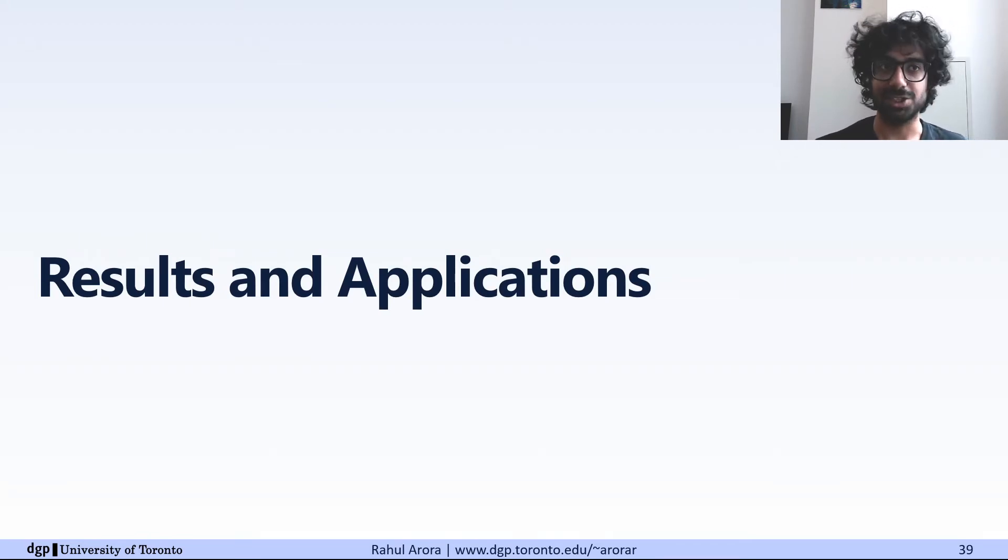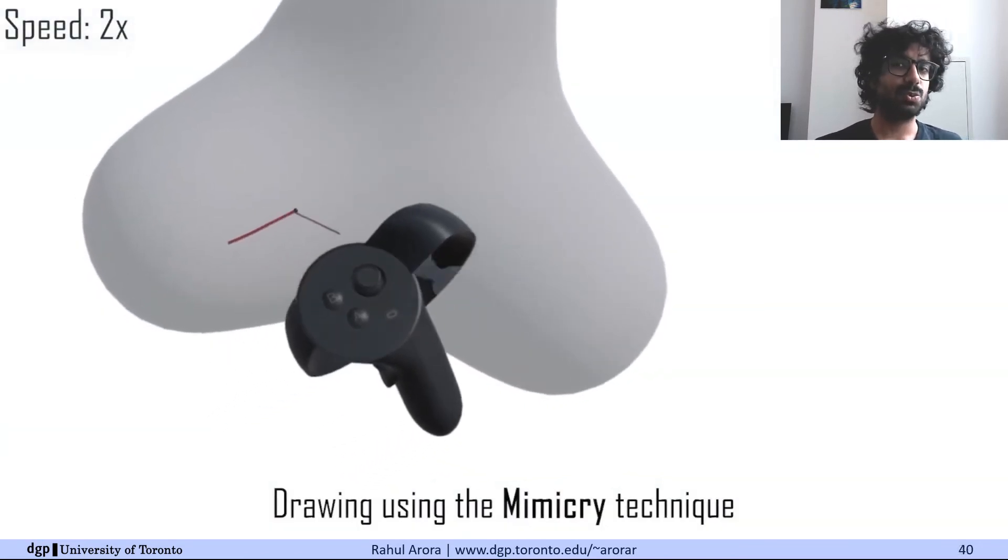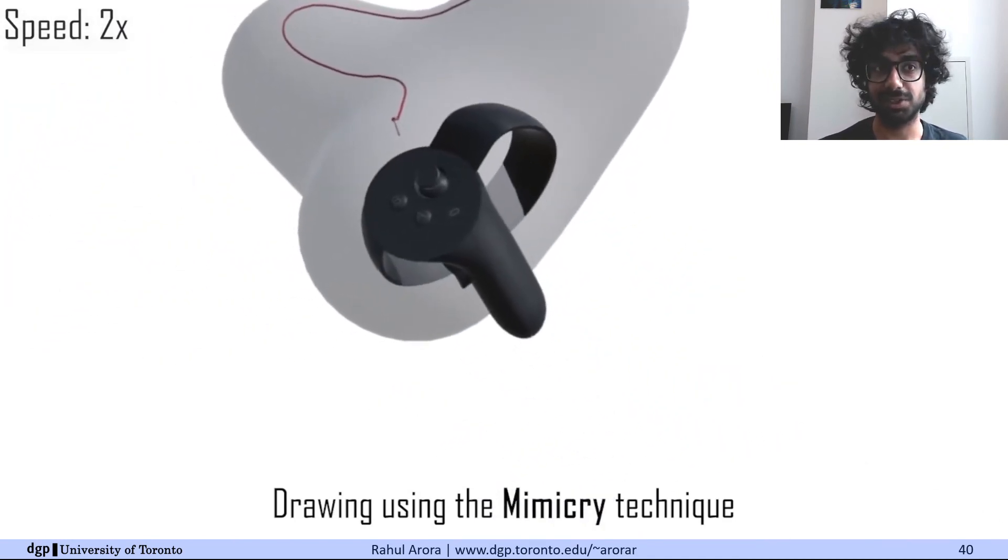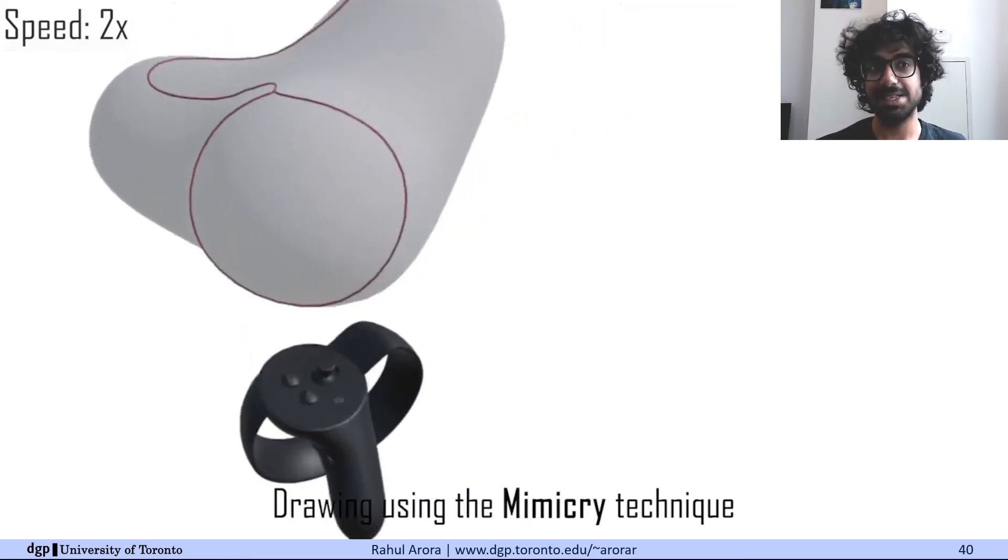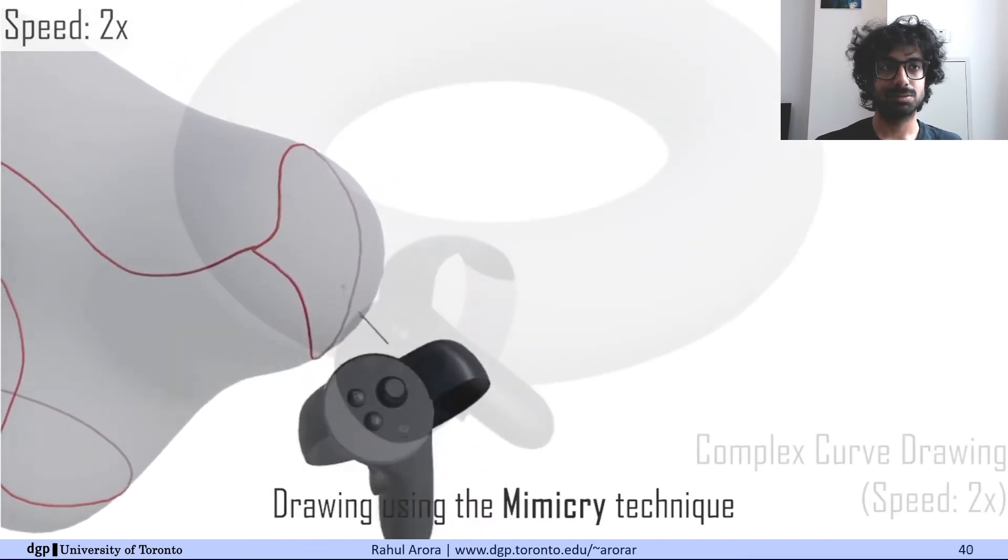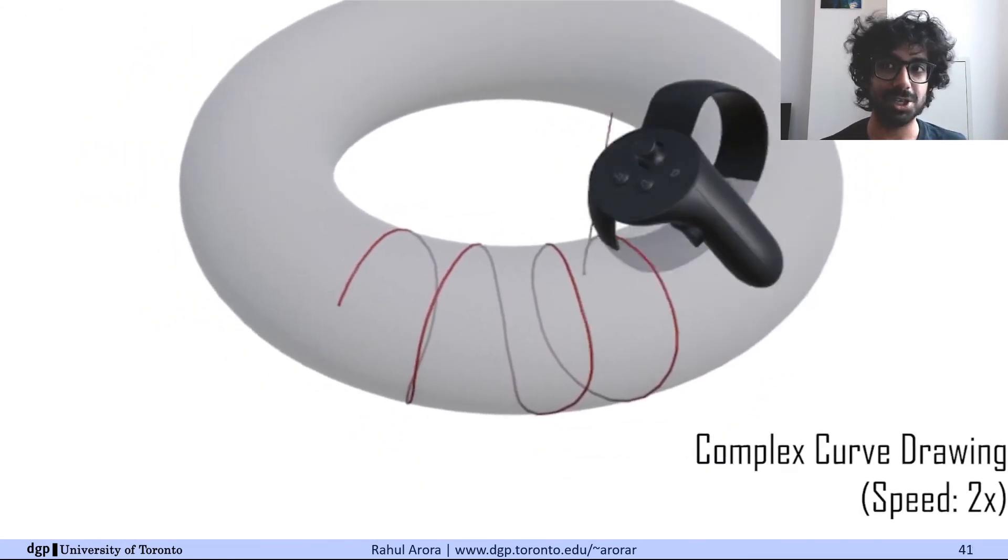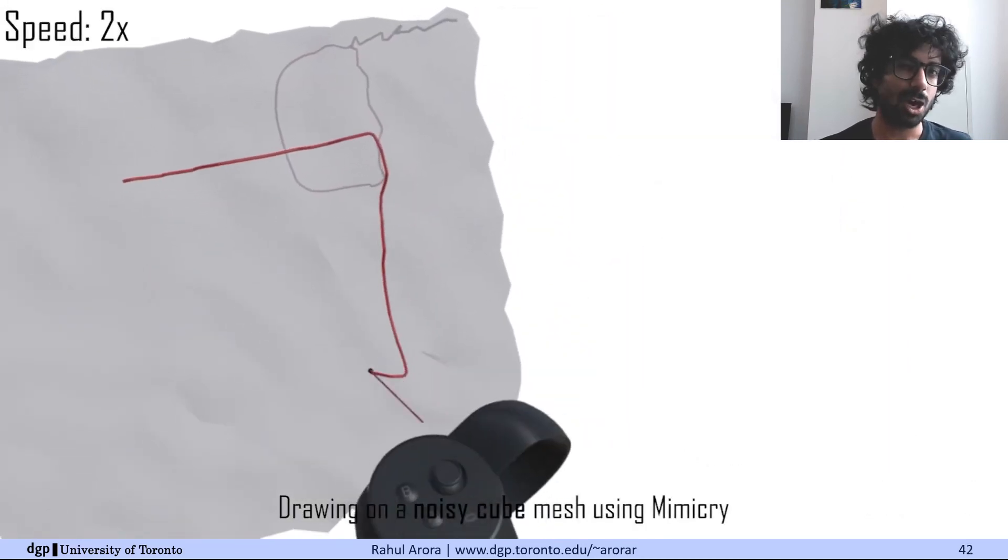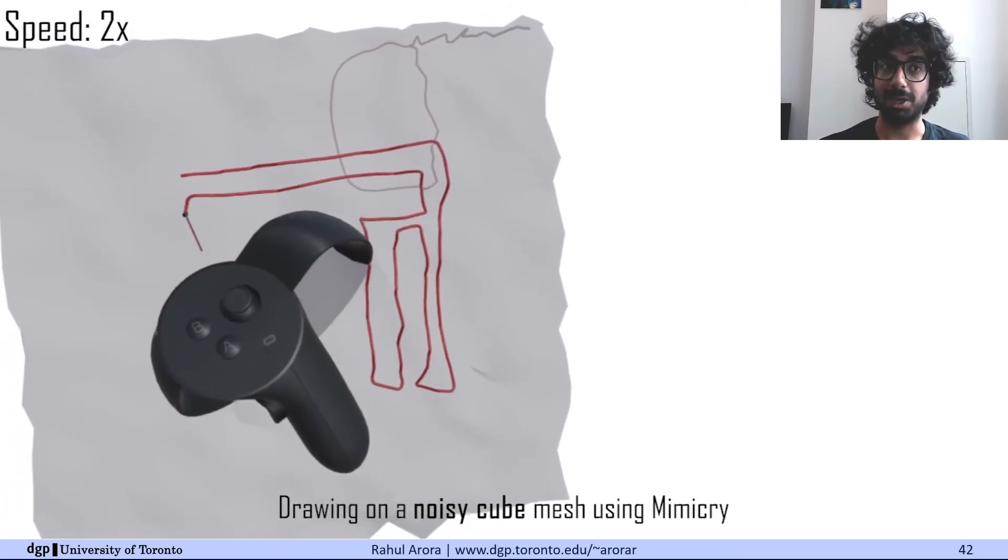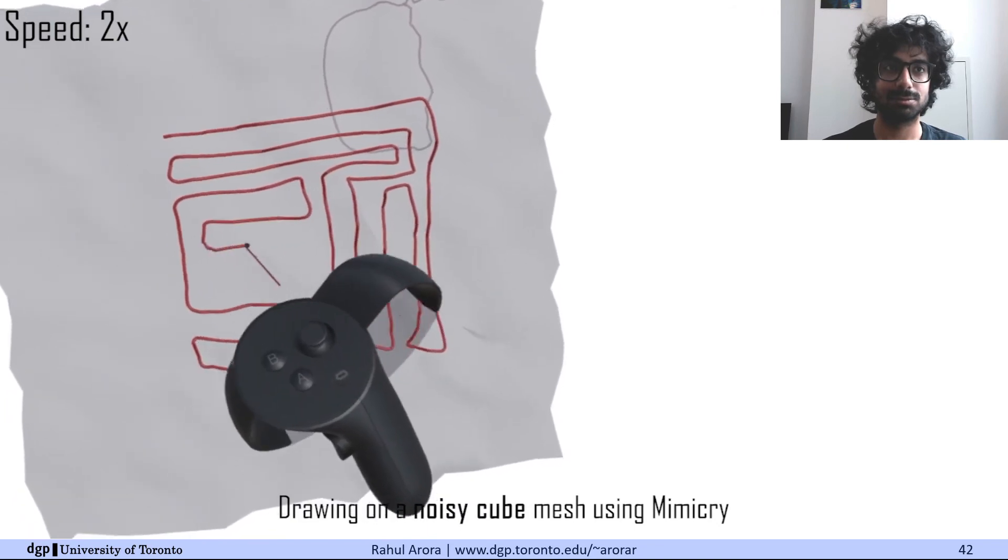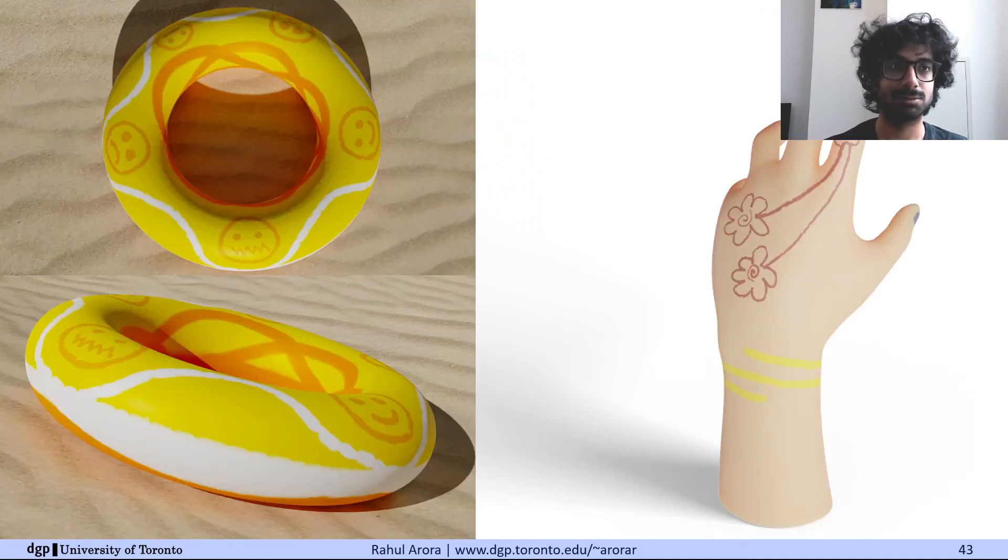Now I'll talk a bit about the applications of this technique. First, I'll show a curve gallery. These curves would be incredibly difficult, and some even impossible to perform with the context-free techniques. But with stroke mimicry, you can easily draw such complex curves. Curves that loop around the geometry multiple times. Or even if the geometry has a lot of noisy details, which are hard to mimic precisely.